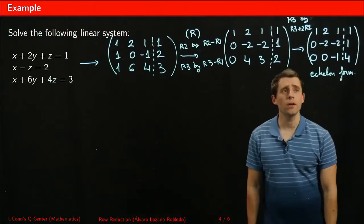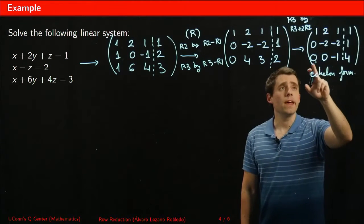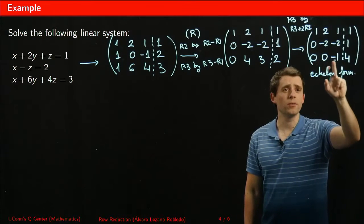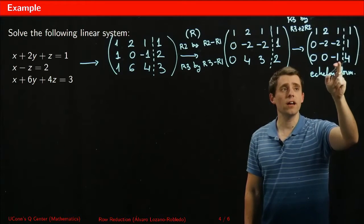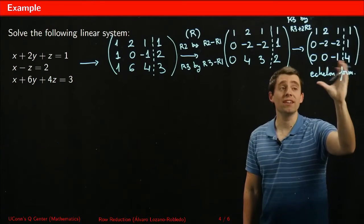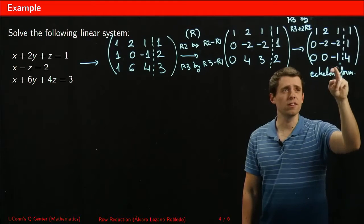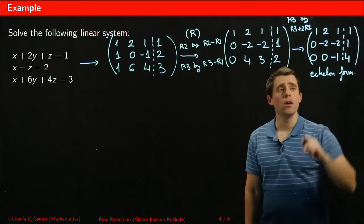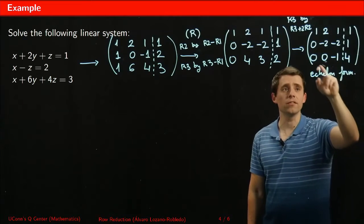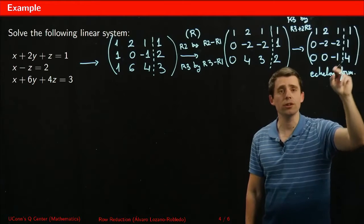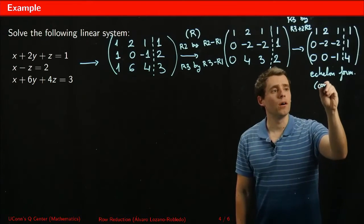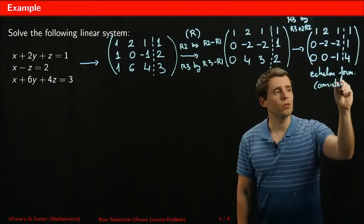A theorem tells us that if in the echelon form there are no rows of zeros in the system matrix, then it's consistent — there are solutions. If there was a row of zeros with a zero on the right-hand side, that's also consistent. But if there's a row of zeros with a non-zero entry on the right-hand side, then it's not consistent and there are no solutions. So we know there are solutions at this point.